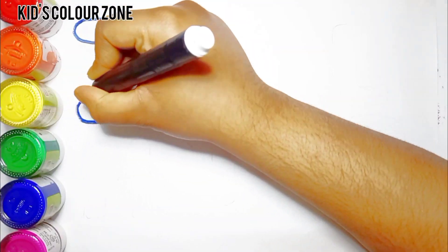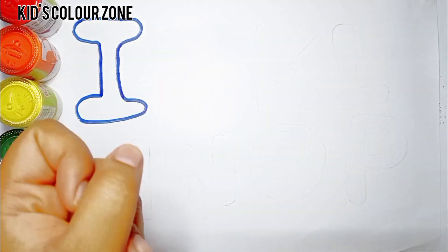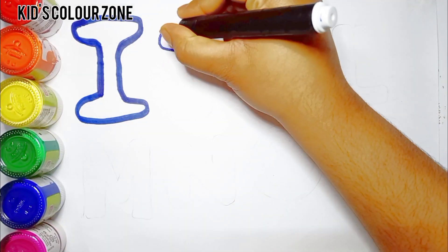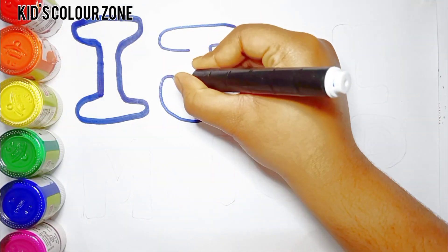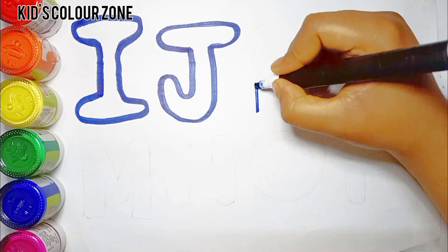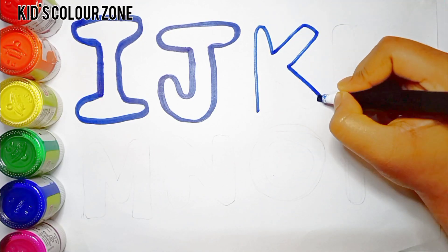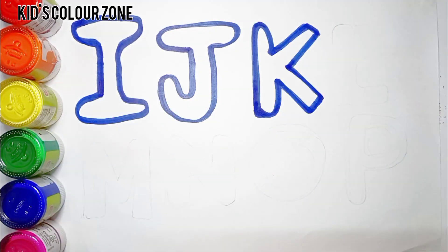This letter is I. Repeat with me: I. This is J. This is K.